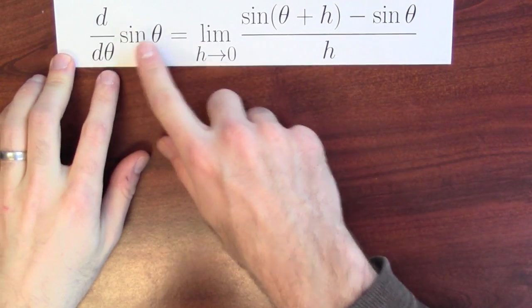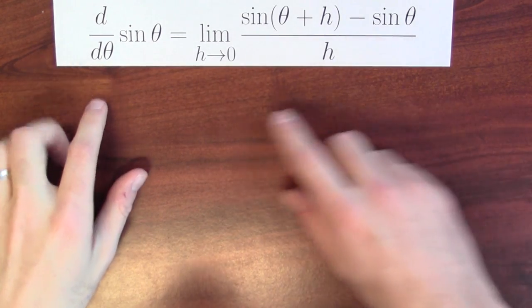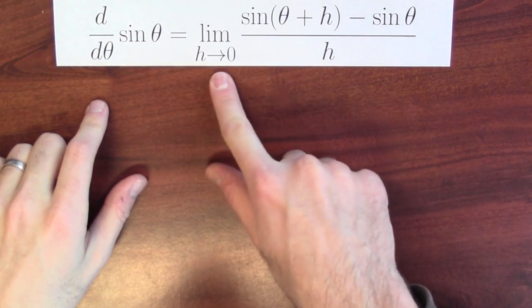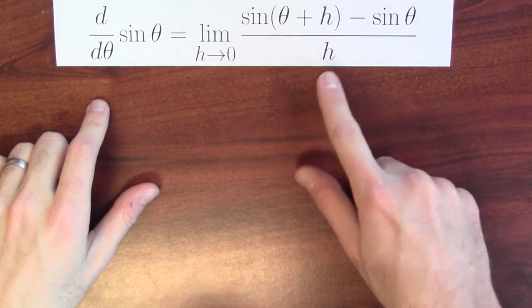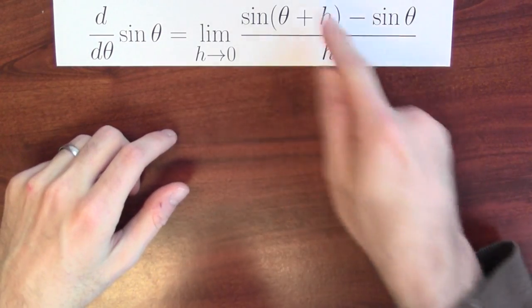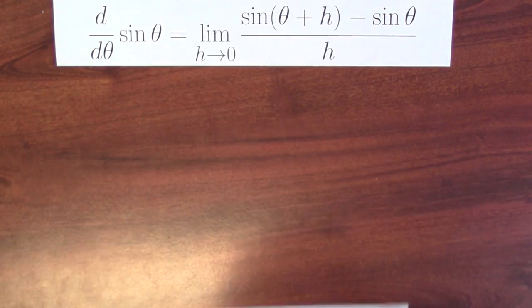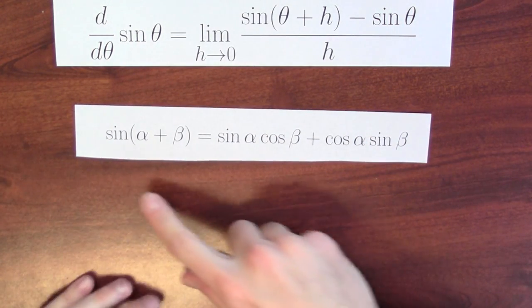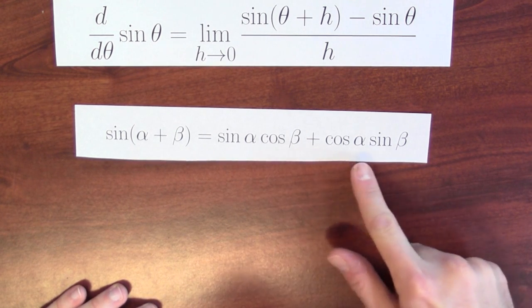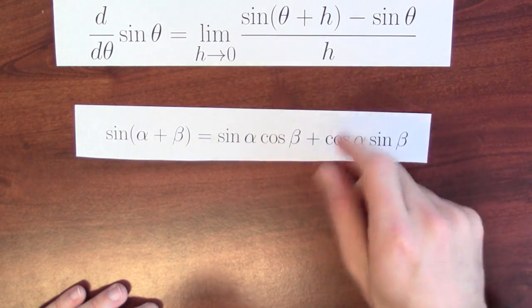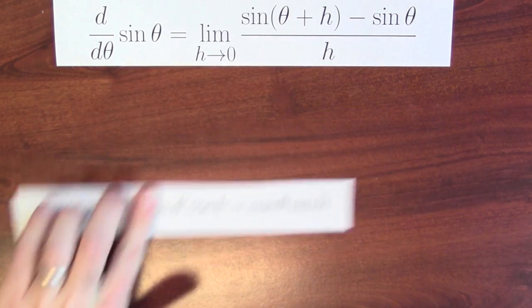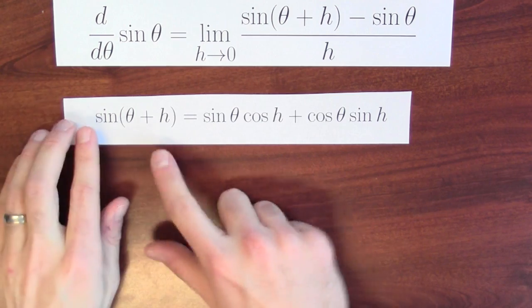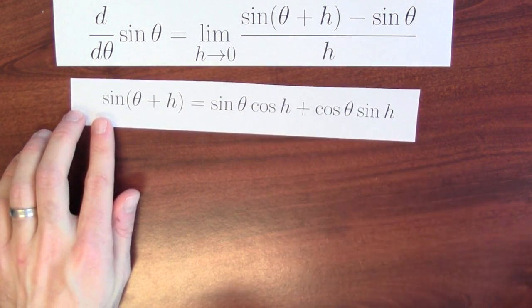Maybe you don't find all this geometry convincing. We could go back to the definition of derivative in terms of limits and calculate the derivative of sine directly. The derivative of sine is the limit as h approaches 0 of (sine(theta+h) minus sine theta) over h. To calculate sine(theta+h), we use the angle sum formula: sine(alpha+beta) equals sine alpha cosine beta plus cosine alpha sine beta. Replacing alpha by theta and beta by h, sine(theta+h) equals sine theta cosine h plus cosine theta sine h.